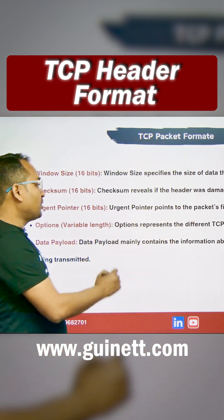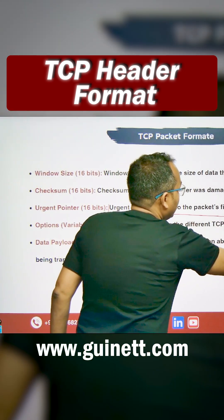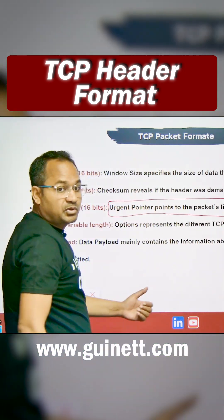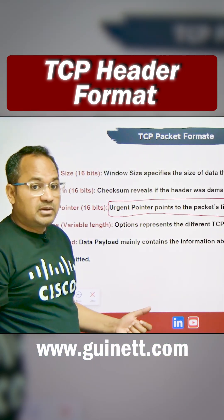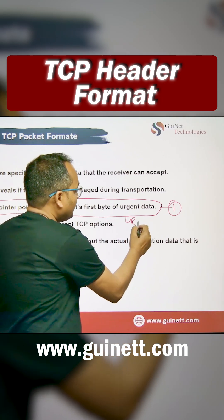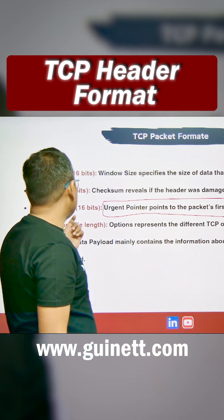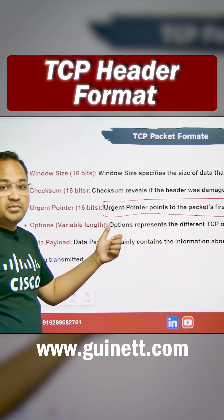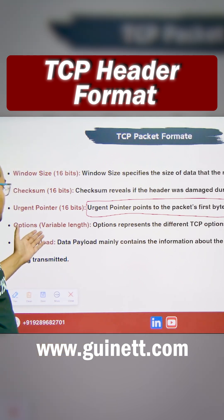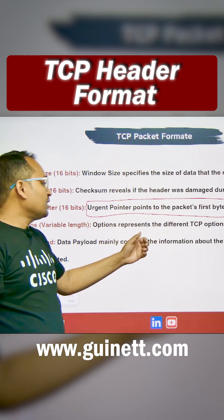The urgent pointer — we discussed this — it makes sure that any data available that urgently requires transportation has the URG flag set to one. For that particular section, the data is going to be considered as an urgent pointer and is going to be transported at priority level.